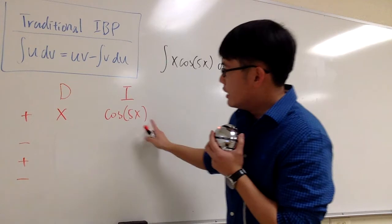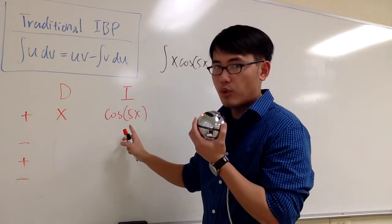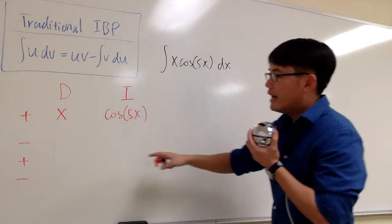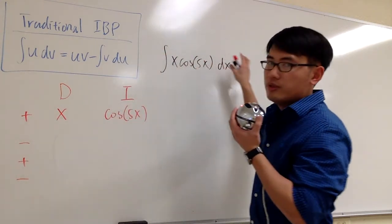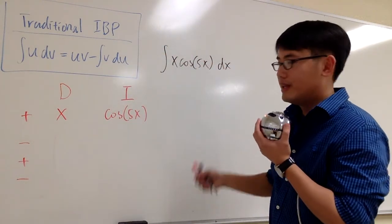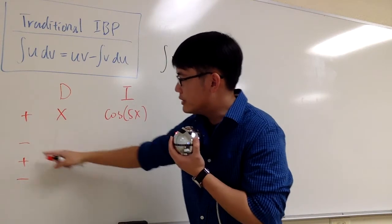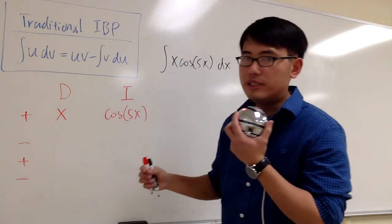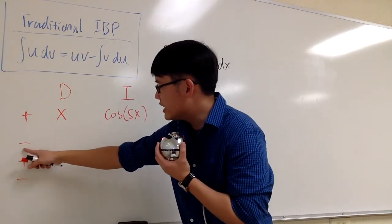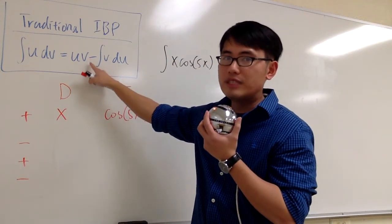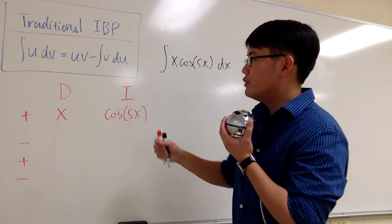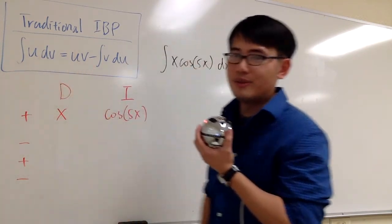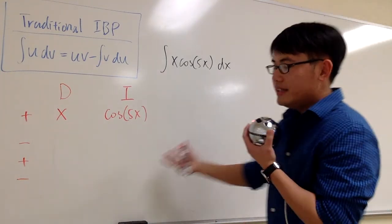As you can see, this row actually represents an integral. You see, x times cosine 5x, that represents the integral. The reason we have a plus is because the original integral was positive. And the next row has negative. The product of each row represents an integral. The reason this is negative is because the original formula says so. We are going to subtract another integral. Remember, when you are doing integration by parts, you have to do an integral inside of another integral. Anyways, this is how we get ready.